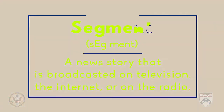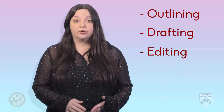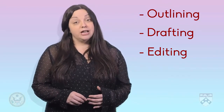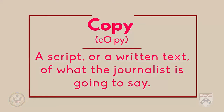Now let's talk about the structure of news stories for television, internet, and radio. A segment is a news story that's broadcasted rather than printed. As we discussed in Unit 2, printed news stories are articles. When we talked about print media, we talked about the process of outlining, drafting, and editing with a copy editor before a story goes to print. In broadcast news, the draft is called a copy — a script, or written text, of what the journalist is going to say.